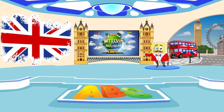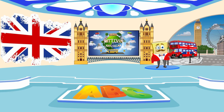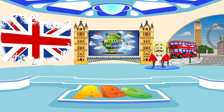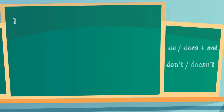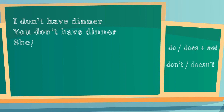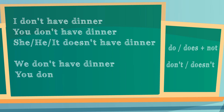Now, let's talk about the negative form of verbs. Sometimes, we don't like doing anything. How should we negate to do something? The negative form of the verb uses auxiliary verbs do/does and not: don't, doesn't. I don't have dinner. You don't have dinner. She/he/it doesn't have dinner. We don't have dinner. You don't have dinner. They don't have dinner.